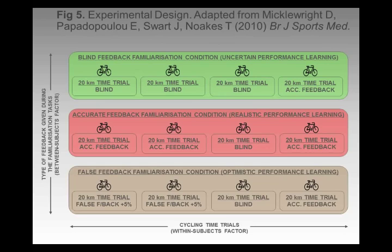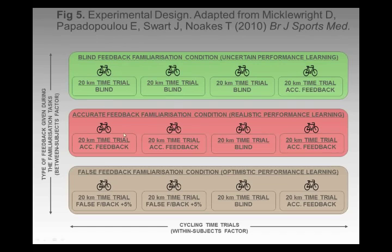This was the study that I did in South Africa with Tim. Essentially we had subjects randomly allocated into three conditions — they were good cyclists from a cycling club in Cape Town. They were either put into a blind feedback condition, an accurate feedback condition, or a false feedback condition. The first two time trials were used as familiarisation and also as a way of conditioning athletes to get them used to cycling with different types of information.